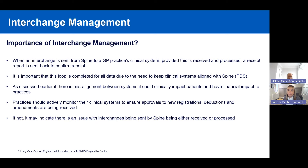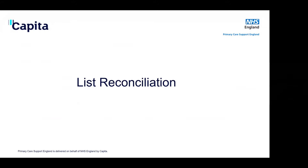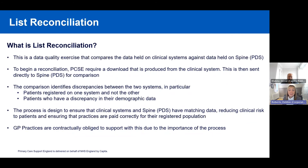List reconciliation is a data quality exercise that compares data held on a clinical system against Spine and PDS. The process is initiated by PCSE making a request to the practice to undertake a reconciliation, although a practice can also ask for one. The key component is the practice providing a download of their patient information from the clinical system. PCSE sends that to Spine for comparison, which checks whether patients from the practice download are registered on PDS and vice versa.